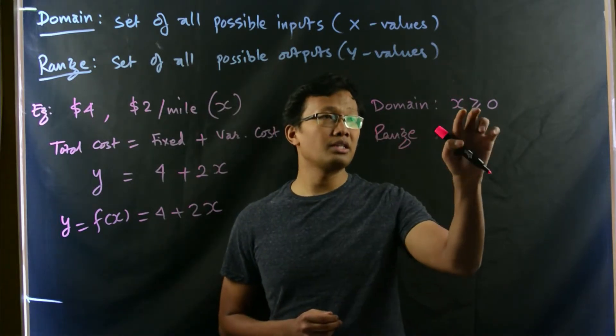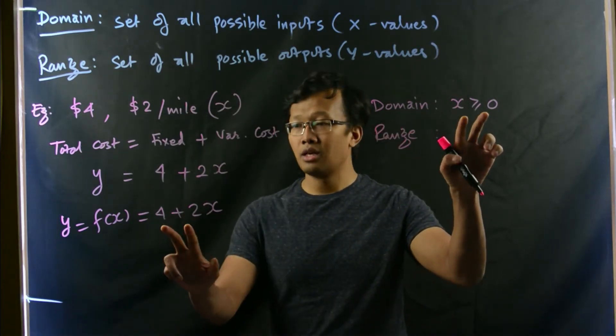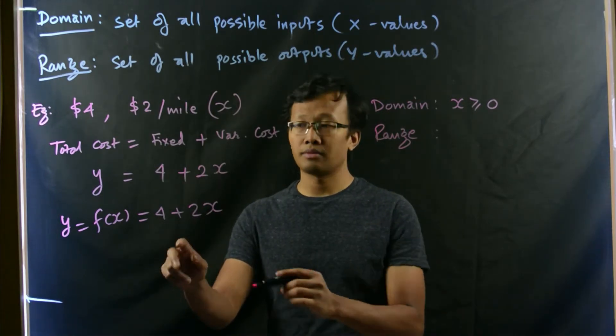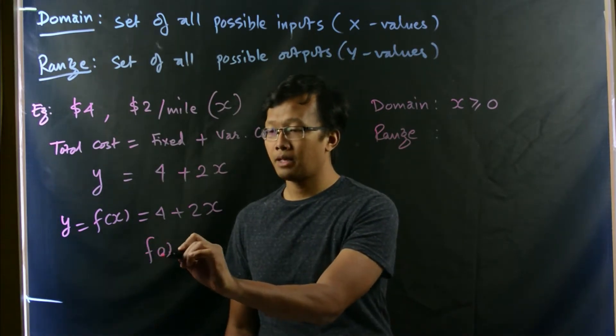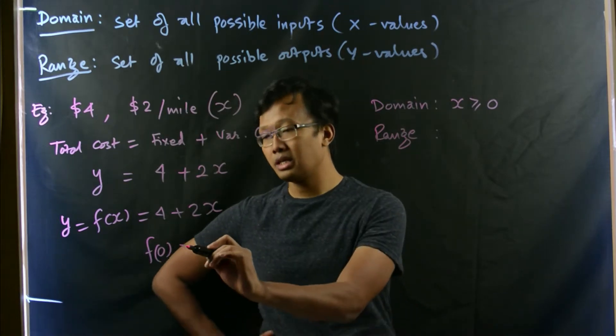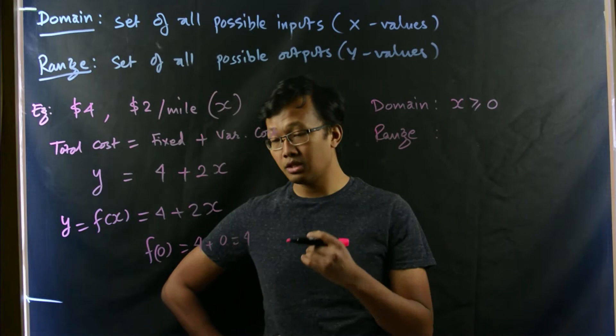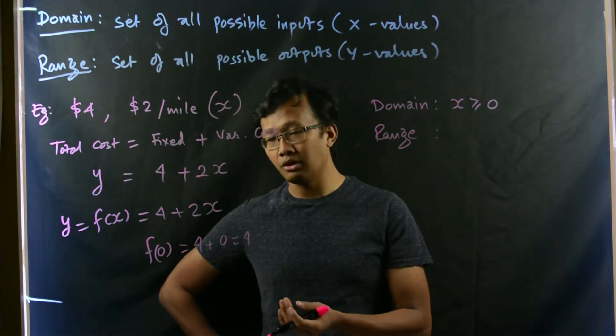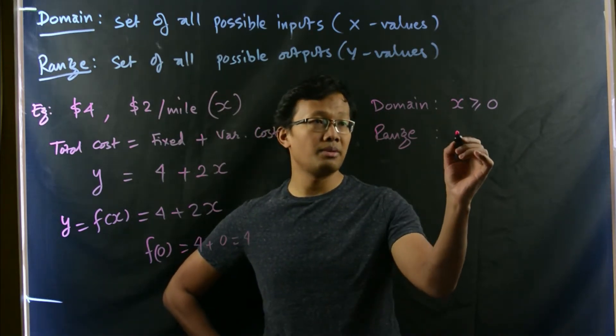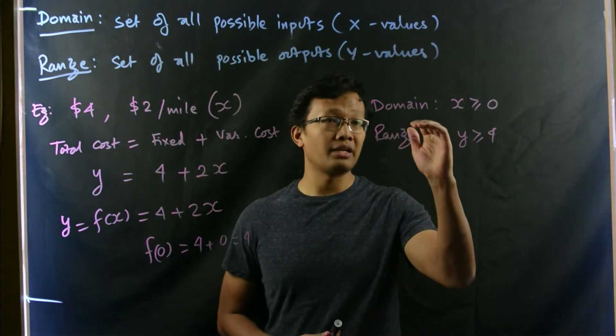Range is simply, you plug in this value, the least value in here. So, if you plug in f of 0, if you travel for 0 miles, then it would be simply 4 plus 2 times 0 is 0, which is 4. The least amount of price that you would be paying would be $4. So, that would be y is greater than or equal to 4. So, this is domain and range.